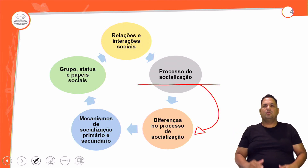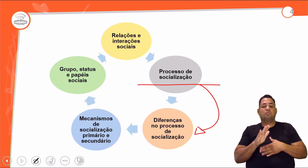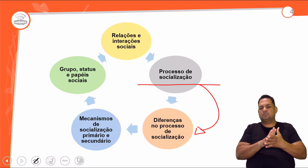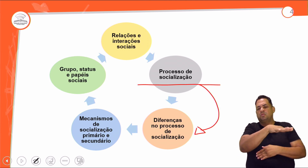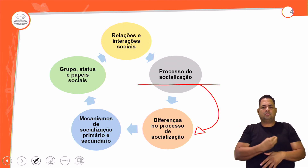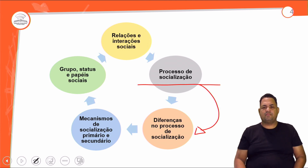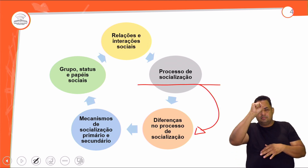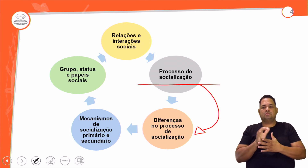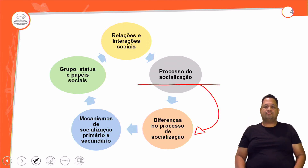Quando acaba o processo de socialização? Só acaba quando a gente morre, porque o indivíduo passa por vários grupos sociais ao longo da sua vida. Em cada grupo que ele passa, ele aprende. A socialização termina com a nossa morte.